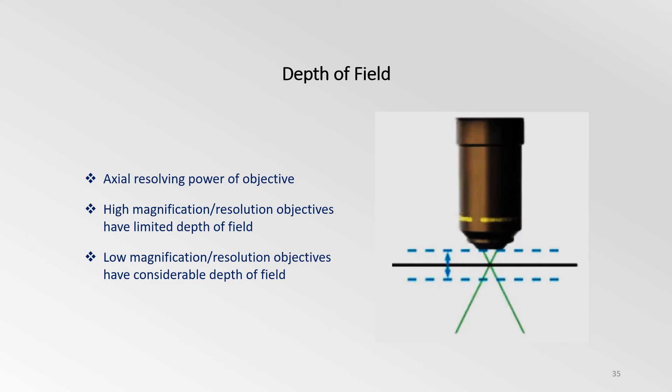Numerical aperture is directly related to the depth of field. For a given objective, when looking at a sample, there is a particular plane of perfect focus. The depth of field is how far above and below that plane the objective and sample can be in and still have everything in focus. In other words, depth of field refers to the actual resolving power of an objective.